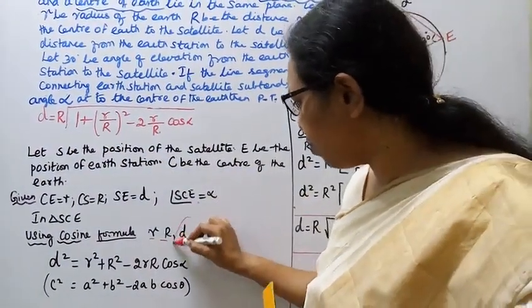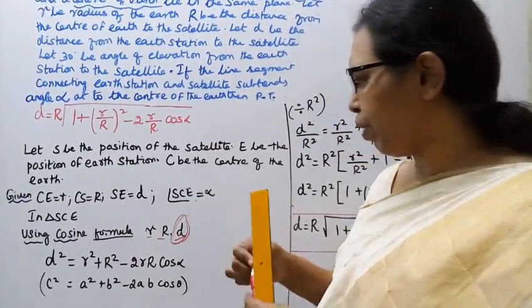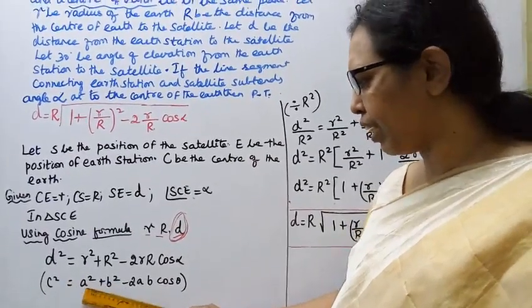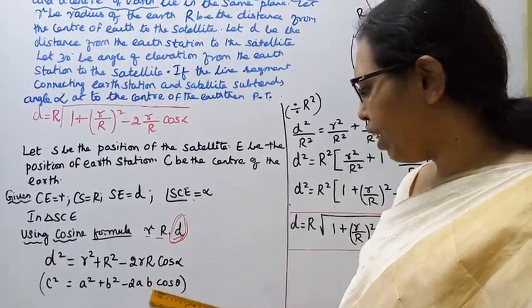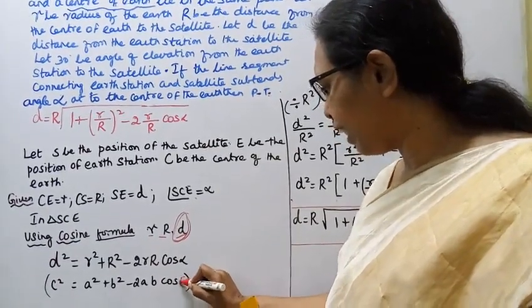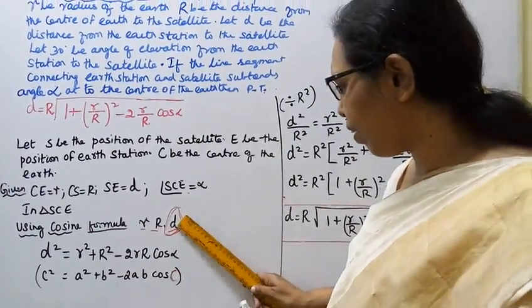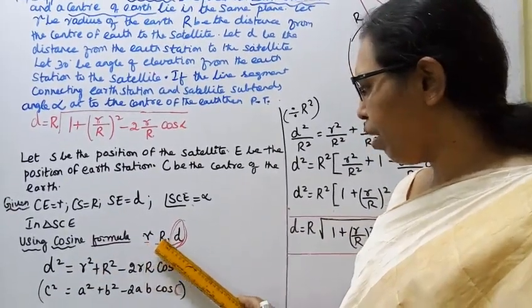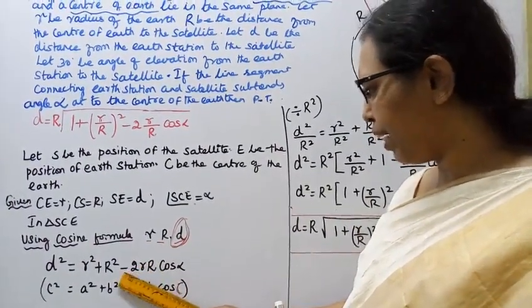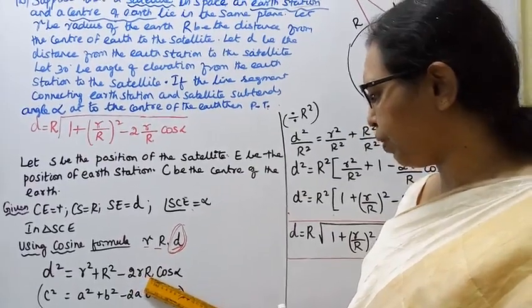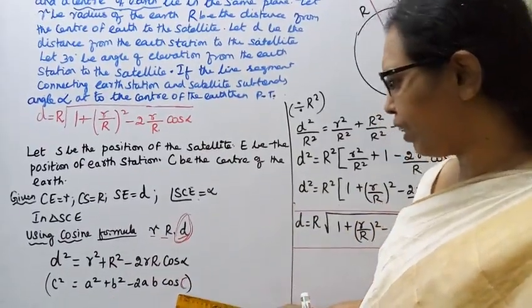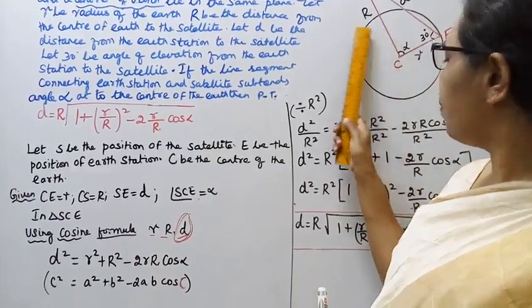Using the cosine formula: c² = a² + b² − 2ab·cos C. We get d² = small r² + capital R² − 2·small r·capital R·cos alpha. So the formula gives us the three sides: small r, capital R, and d.